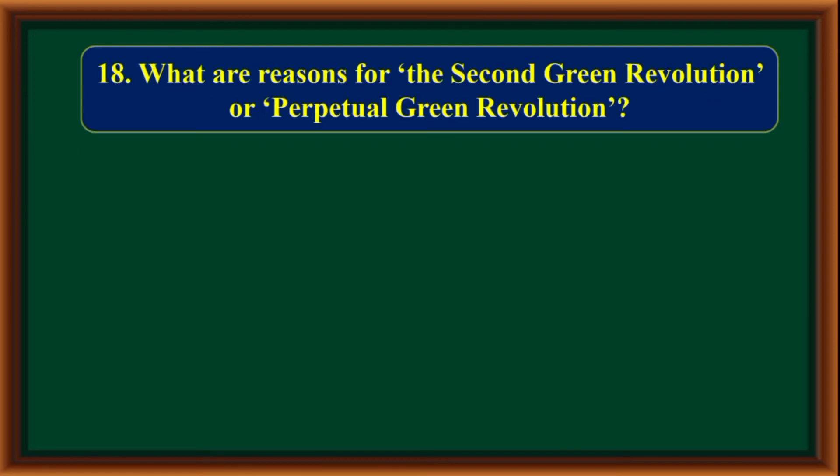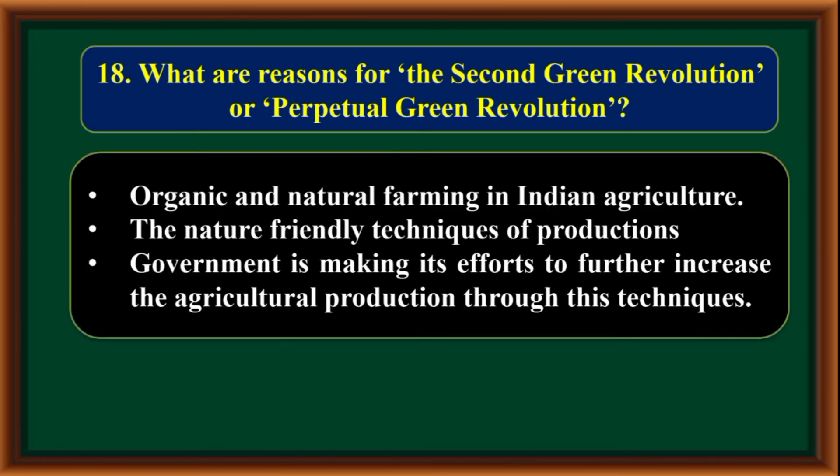What are the reasons for the second green revolution or perpetual green revolution? Organic and natural farming in Indian agriculture and nature-friendly techniques of production — the government is making efforts to further increase agricultural production through these techniques.